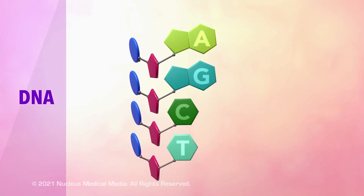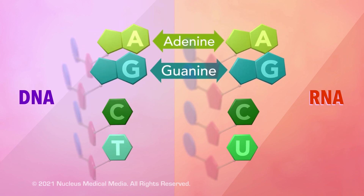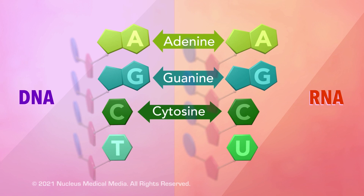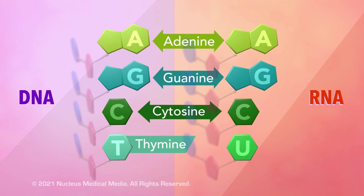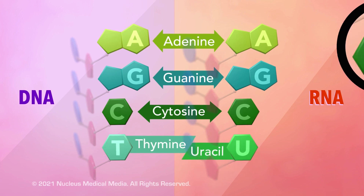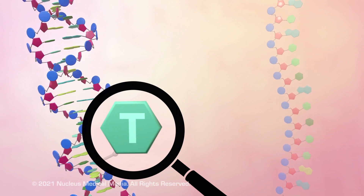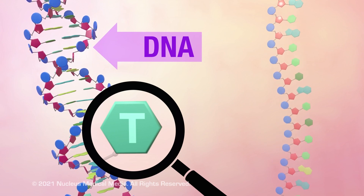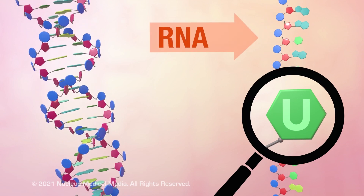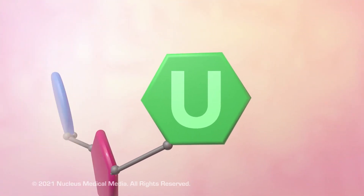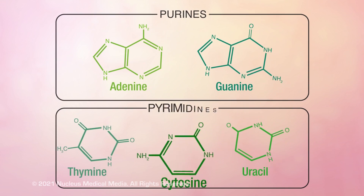Like DNA, an RNA nucleotide may have the nitrogenous bases adenine, guanine, or cytosine. But unlike DNA, which has thymine, RNA has the nitrogenous base uracil instead. This means any nucleic acid containing thymine must be DNA, and any containing uracil must be RNA. Like thymine, uracil has a single nitrogen-containing ring, so it is also classified as a pyrimidine.